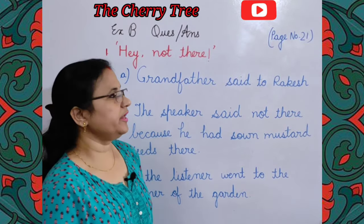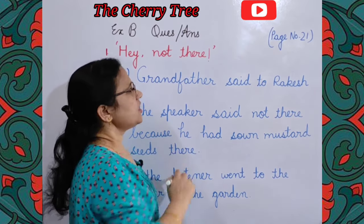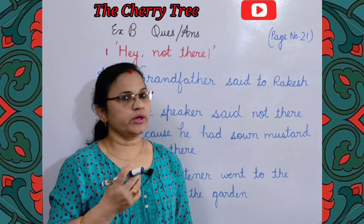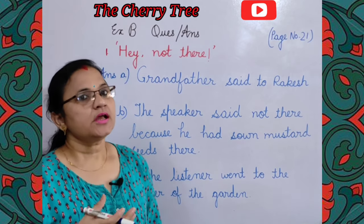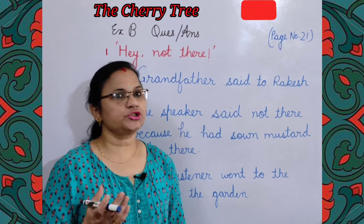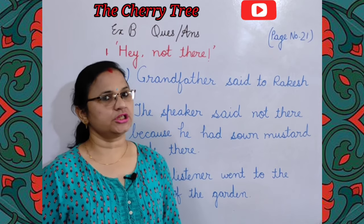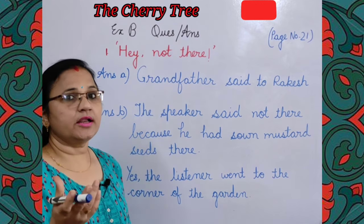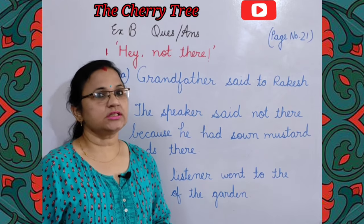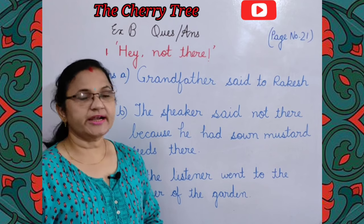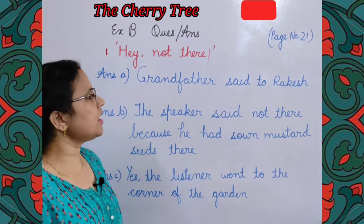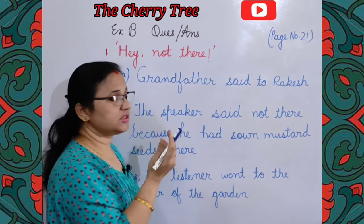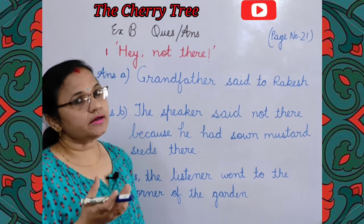Next we are going to do Exercise B — question answers, who said to whom, on page number 21. Here one quotation is given from the chapter and based on that quotation few questions are asked. First quotation is 'Hey, not there!' Question: Who said these words? Answer: Grandfather said to Rakesh.